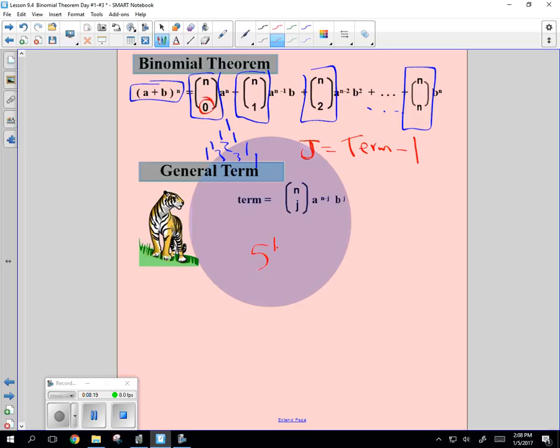So if it's the fifth term of x plus y to the 12th, you could figure this out. You would go 12, choose, well, it's the fifth term. What will J be? 4. The power of y will be 4. And then you just go x to the 12 minus 5. That's the descending x. And y to the, I said 5, 4, I mean, y to the 4th. And so whatever 12 choose 4 is, I'm sure it's a lovely number, x to the 8th, y to the 4th. So let's try a couple.